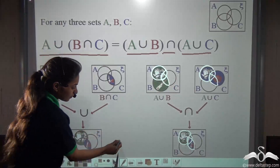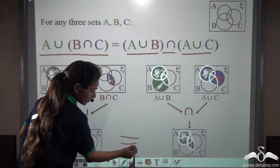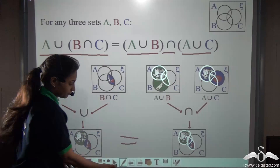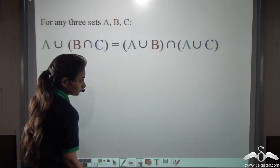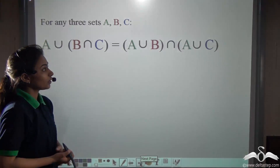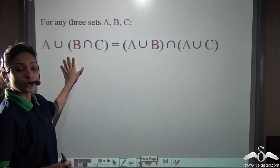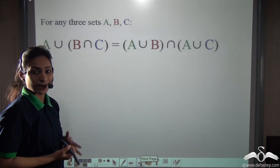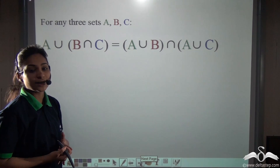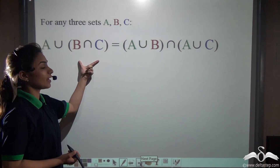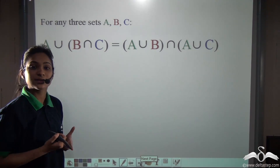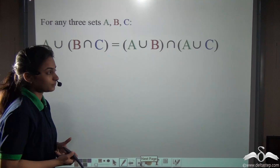Look at it — both of these are the same. Now you have seen this in the Venn diagram. Let us see whether we get the same result in the numerical sums as well.